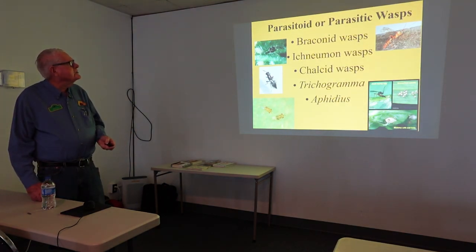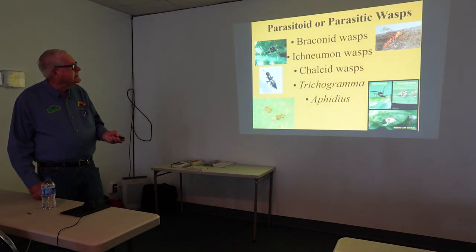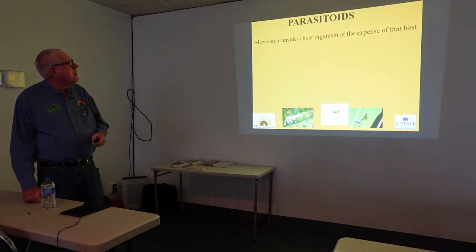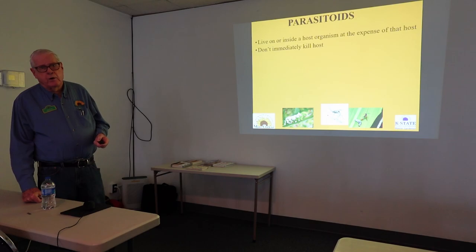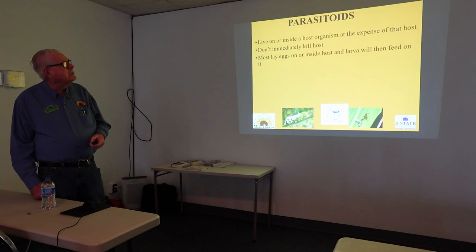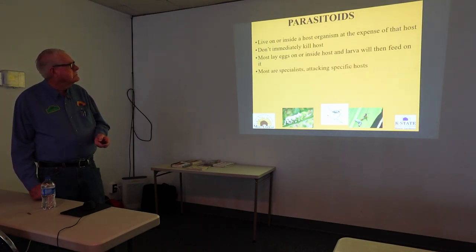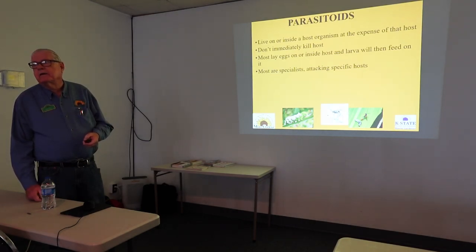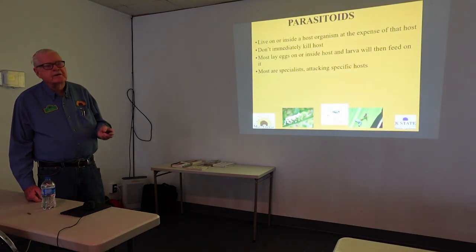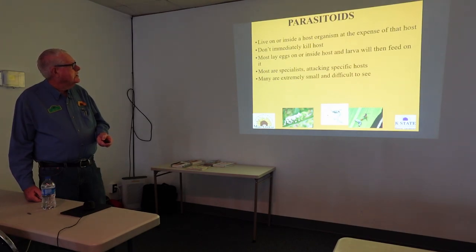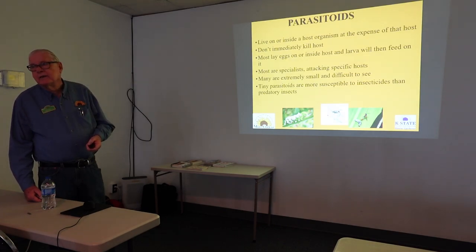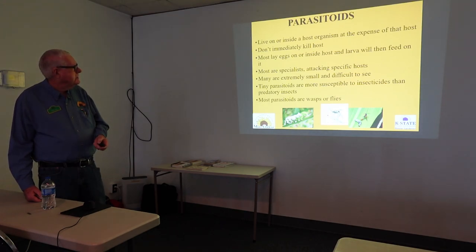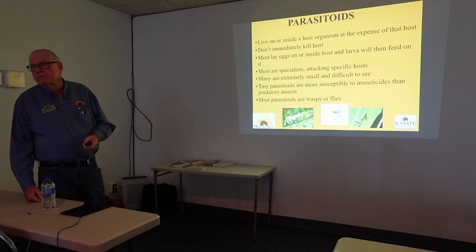Parasitoid and parasitic wasps — we have a number of them. They're very small and hard to see. They live either on or inside the host organism at the expense of the host, but they don't immediately kill the host. Most lay eggs on or inside the host, and then the larva feeds on the host. Most are specialists, going to a specific particular host to lay their eggs. Tiny parasitoids are more susceptible to insecticides than to predators. Most parasitoids are either wasps, bees, or flies.